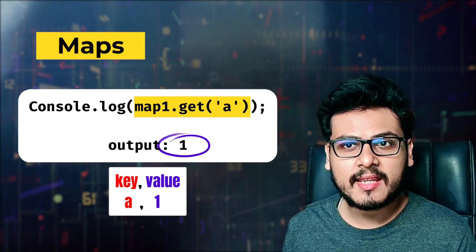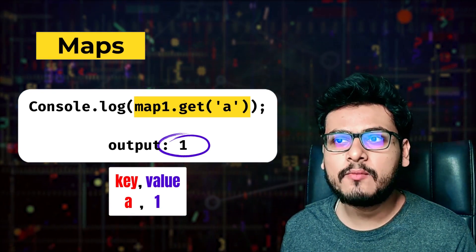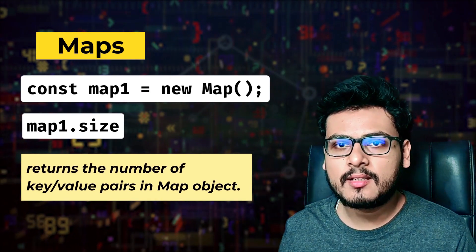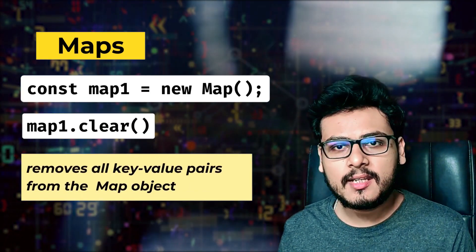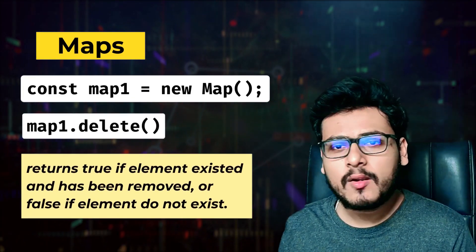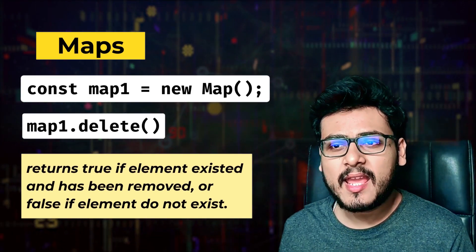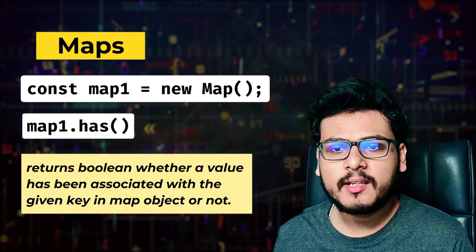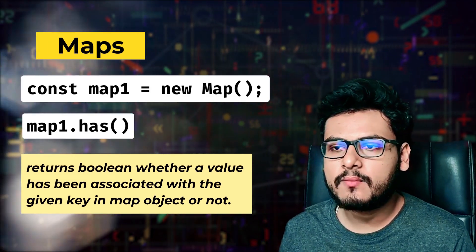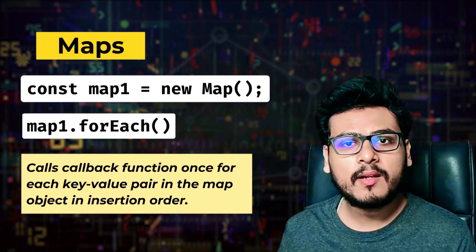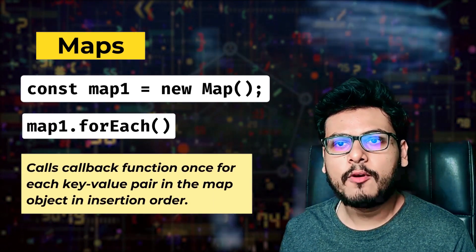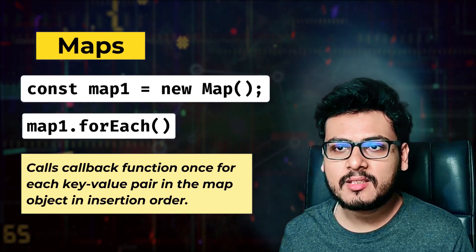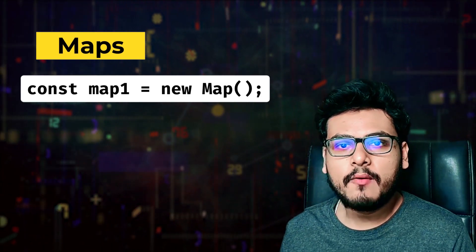What makes maps special is that performing logical operations over data gets quite complex with objects, but with maps it becomes much easier thanks to built-in utility functions. `map1.size` returns the number of key-value pairs. `map1.clear()` removes all key-value pairs. `map1.delete()` returns true if an element existed and was removed, or false if it does not exist. `map1.has()` returns a boolean indicating whether a value is associated with a given key. `map1.forEach()` calls a callback function once for each key-value pair in insertion order.